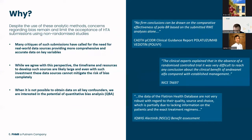Despite use of these analytical methods, concerns around bias remain and limit acceptance of HTA submissions using non-randomised studies. Many critiques have called for real-world data sources to provide more comprehensive data on key variables. While we agree with this perspective, the timeframe and resources required are large, and even with such investment these data sources cannot mitigate bias completely. When it's not possible to obtain data on all key confounders — that is, when there are unmeasured confounders — we're interested in the potential of quantitative bias analysis, or QBA, to quantify some of the uncertainty.